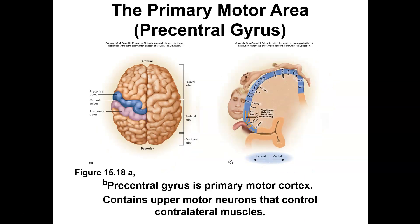For motor control, the precentral gyrus handles motor function. There's a huge dedication to the tongue and hands in the motor cortex — a large section of your brain is dedicated just to controlling the hand. From an occupational therapy standpoint, this is very significant with neurological patients.